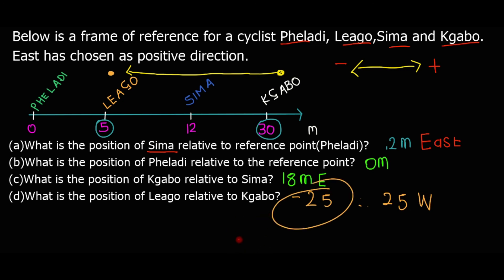So we have covered position and frame of reference. The key thing is final minus initial. These types of problems also appear in velocity, and the procedure remains the same — always find the final and the initial. That's it for this tutorial. Thank you, everyone.